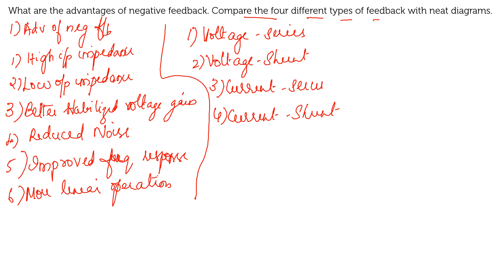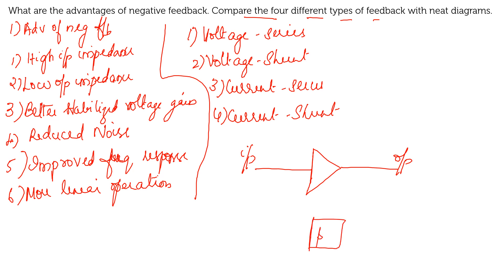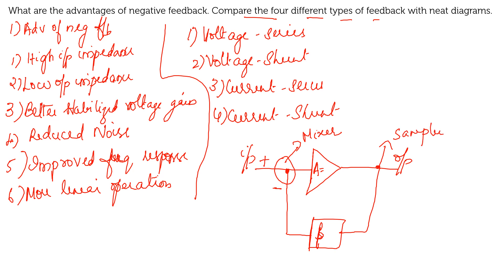Before going to the block diagram, we should understand the main general diagram of a feedback amplifier. You will be having an open loop gain of an amplifier A and the feedback gain as beta. A portion of the output will be fed back to the input. Since it is negative feedback, the input side will have plus and minus — this is called a mixer circuit. On the output side, it is called a sampler or sampling circuit.